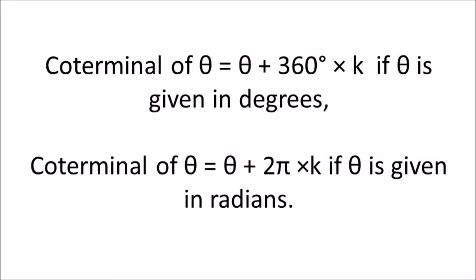Coterminal angles are angles which, when drawn in standard position, share a terminal side. Coterminal angles of a given angle may be obtained by either adding or subtracting a multiple of 360 degrees or 2 pi radians.